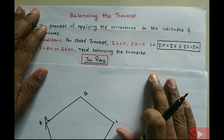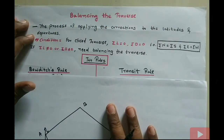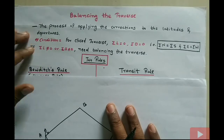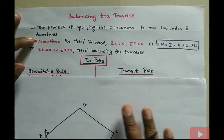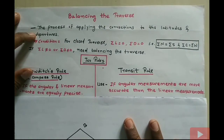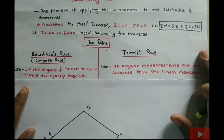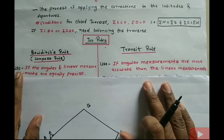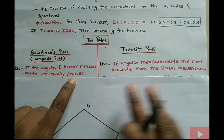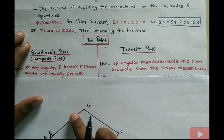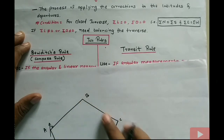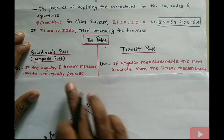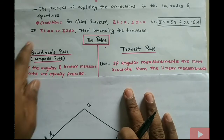There are two rules for balancing the traverse. First is the Bowditch rule, also known as the compass rule — sometimes the compass rule is asked in online exams. Second is the transit rule. The Bowditch/compass rule is used when the angular and linear measurements of the traverse are equally precise — equally accurate. In that case we use the Bowditch rule.